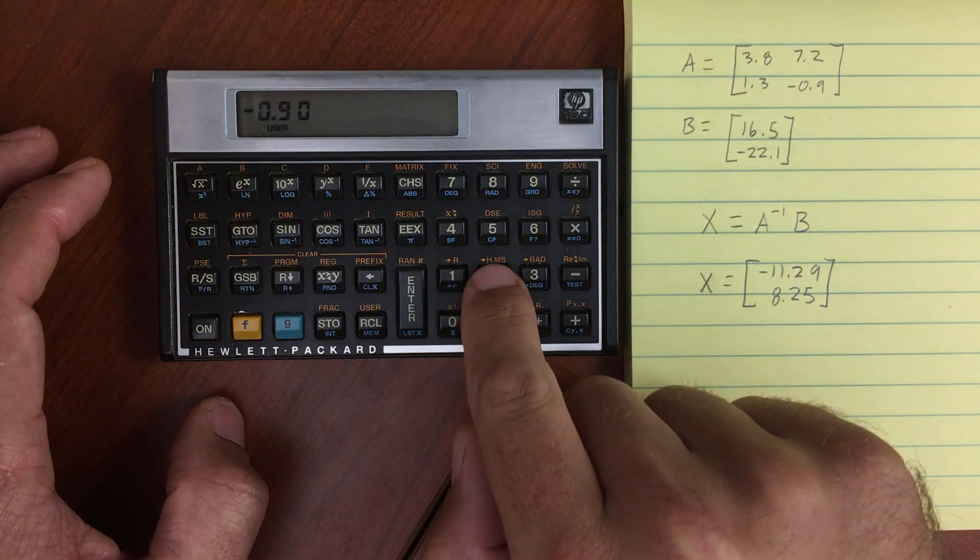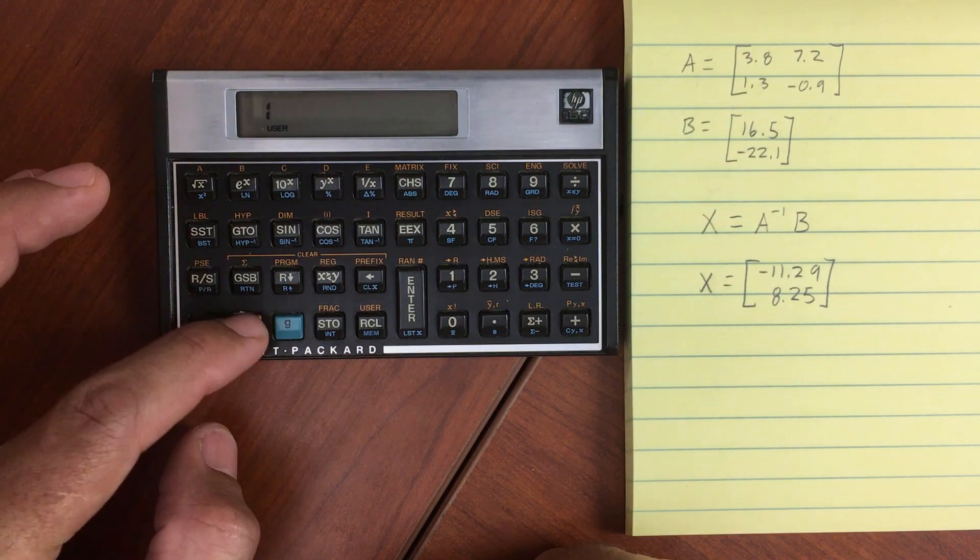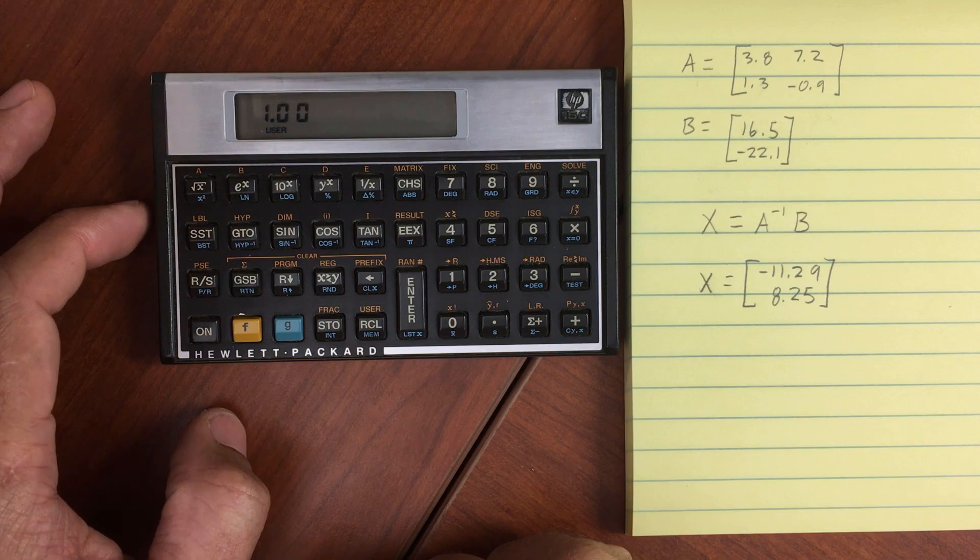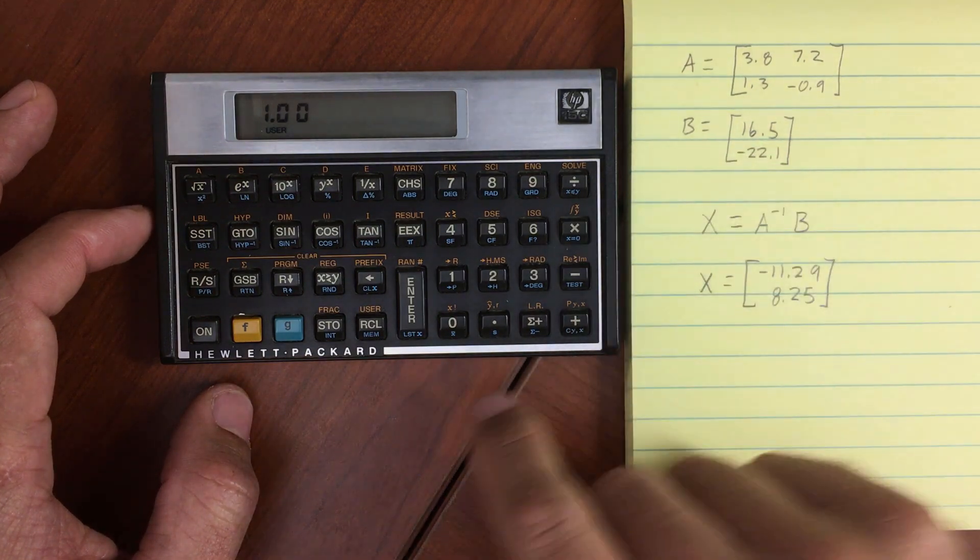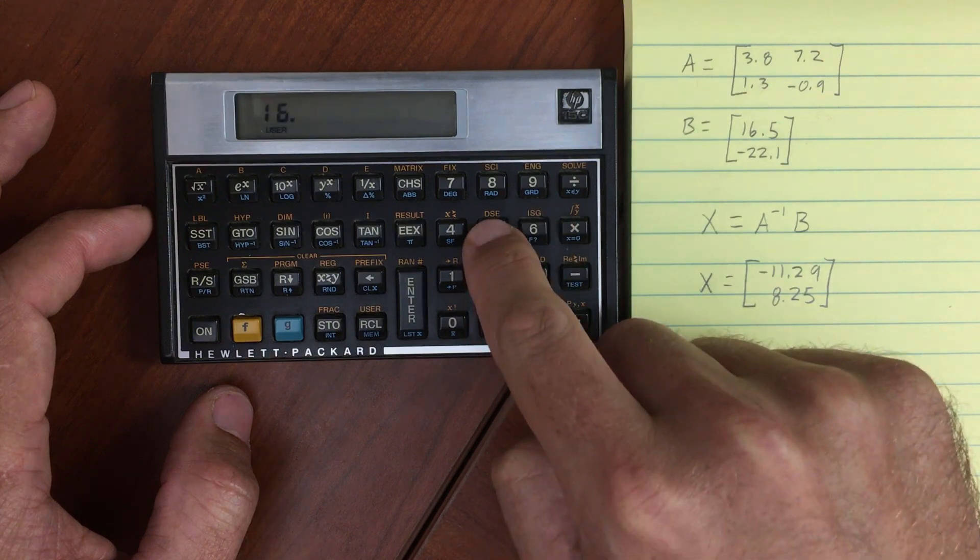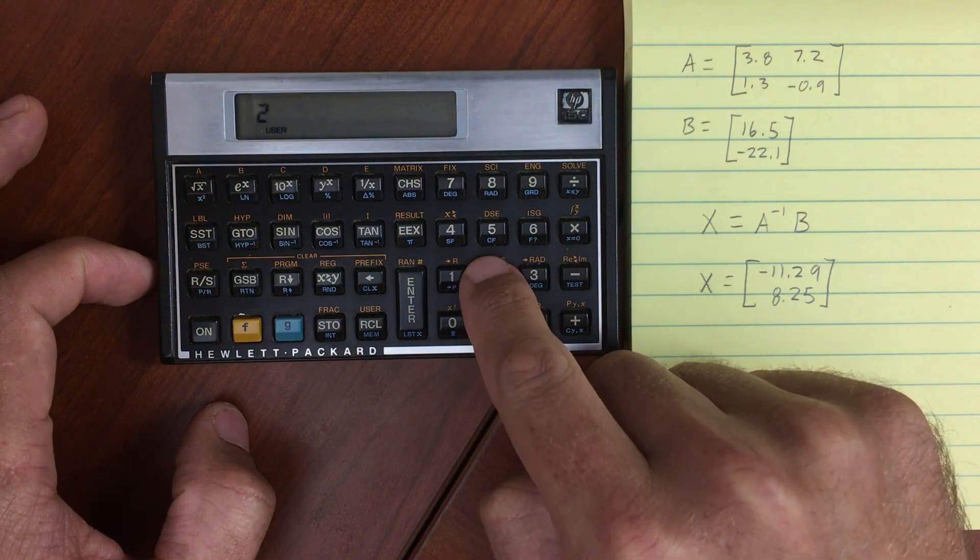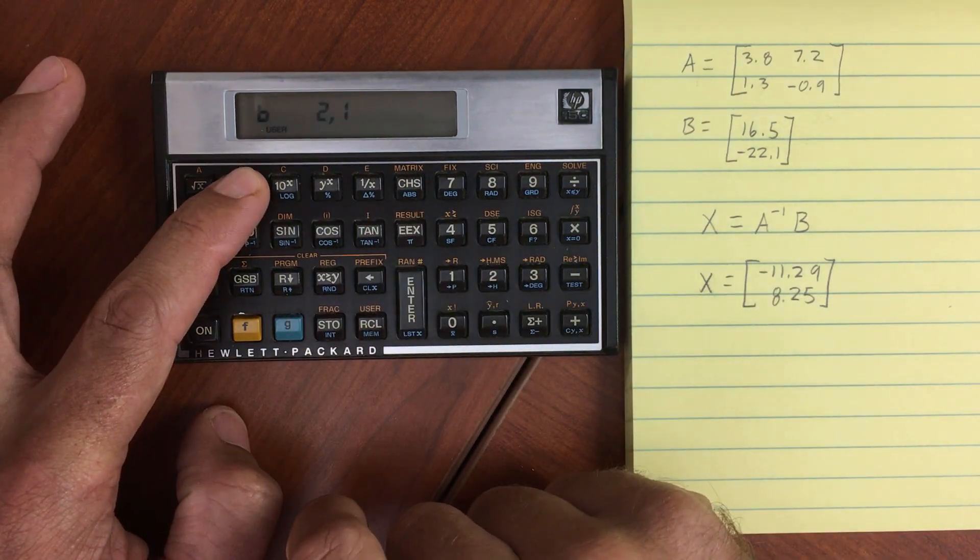Let's do the same thing with B. This one is going to be a 2 by 1 matrix. So let's dimension that. B. Now let's enter in the first element. It's going to be 16.5. Store into B. And negative 22.1. Store into B, 2,1.